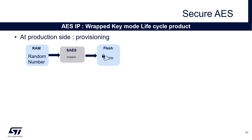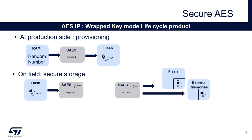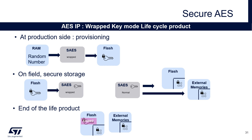Let's see a possible product lifecycle using the wrap key mode. First, at production level, the wrap key needs to be created — a kind of provisioning. Usually a random number is used, and as soon as this value is wrapped, the original clear value can be erased. Then, in the field, to encrypt or decrypt your assets, you just need to unwrap the key and then use it. Finally, at the end of life of the product, if you want to ensure that the encrypted assets cannot be recovered, you just have to erase the wrap key.